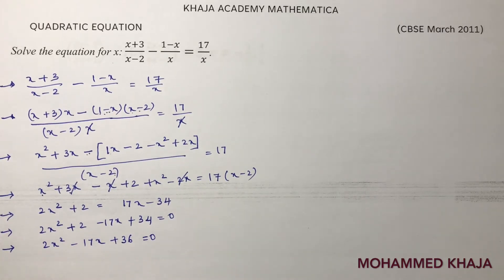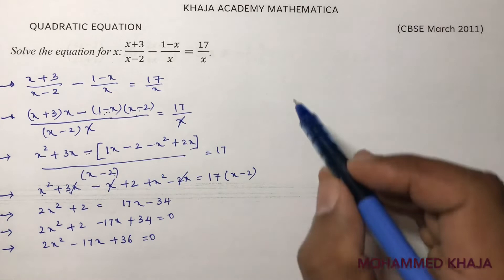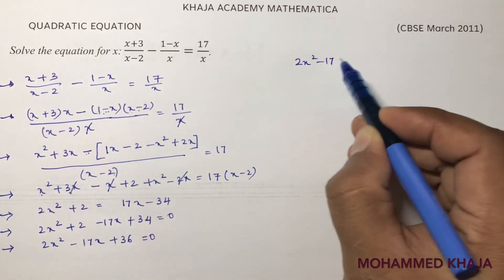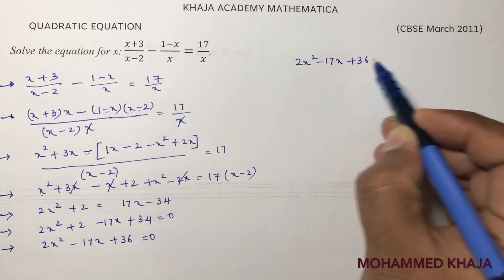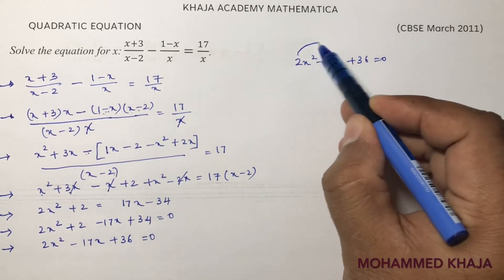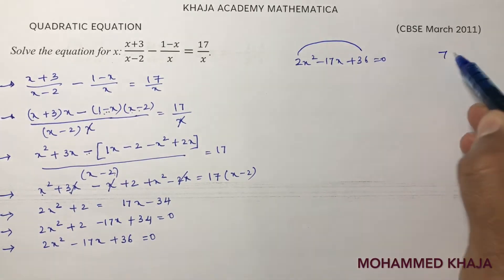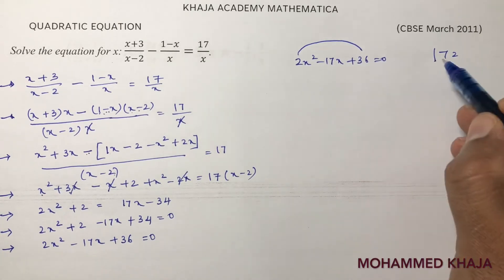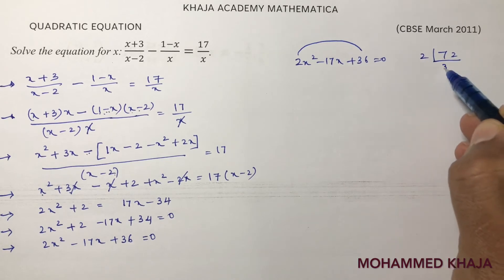So 2x square minus 17x plus 36 equals 0. Now see 2 times 36 is 72. But 72 I need to get 17. 8 times 9 is 72. But you can check like this.